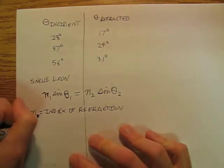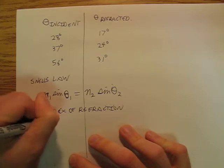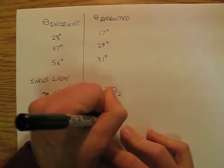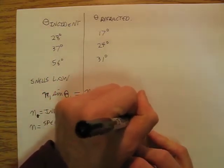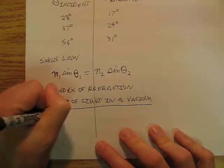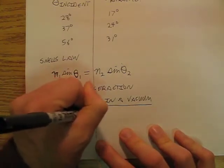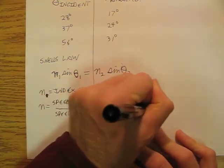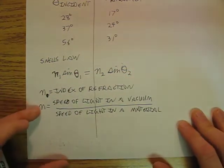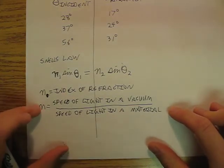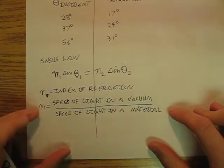And it is, N is the speed of light in a vacuum divided by the speed of light in a material. So N is a measure of how much the light is slowing down. The bigger N is, the more it's slowing down.